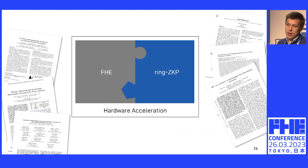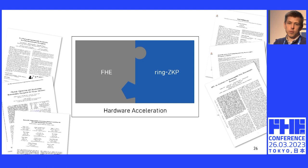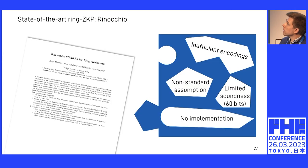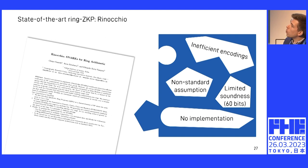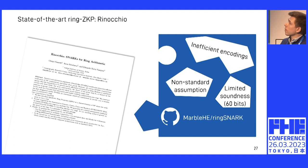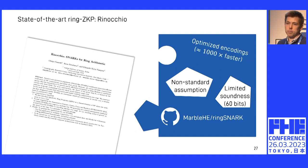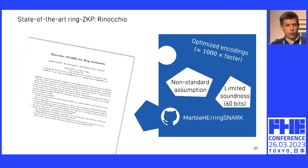The state-of-the-art in this area is a paper called Rinocchio, which provides SNARKs for arbitrary rings. It still has a few open issues. The paper doesn't come with an implementation, so we actually provide an implementation of the Rinocchio scheme. There's also some inefficiency in the encodings used for the inner proofs — by using batching techniques from FHE, we can achieve a significant speedup there. But there are still some open questions: the assumption made is somewhat non-standard in the ZKP world, and the soundness is limited by the FHE scheme parameters, so you have to repeat the proof a few times to get a satisfying level of soundness.